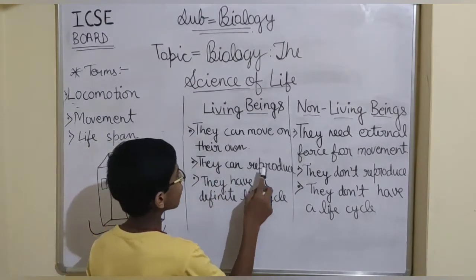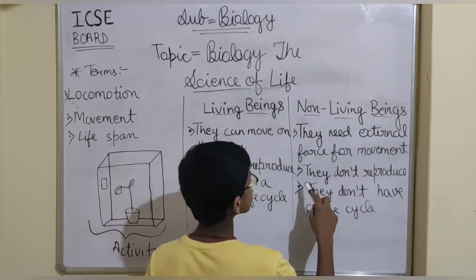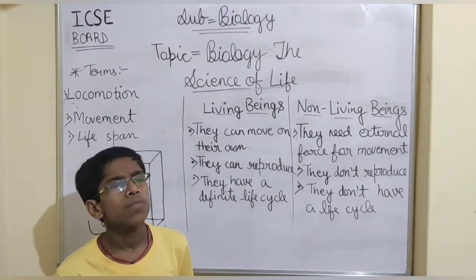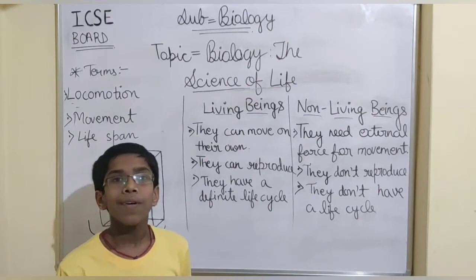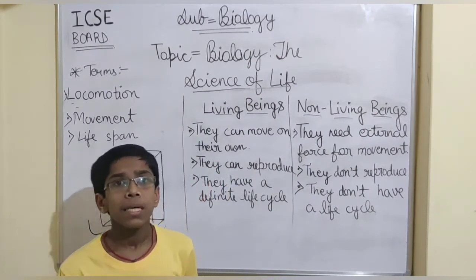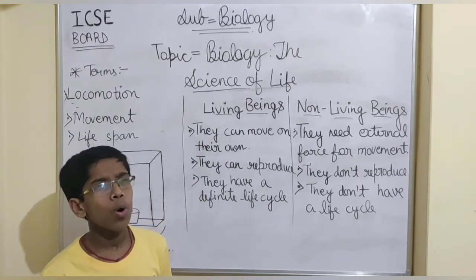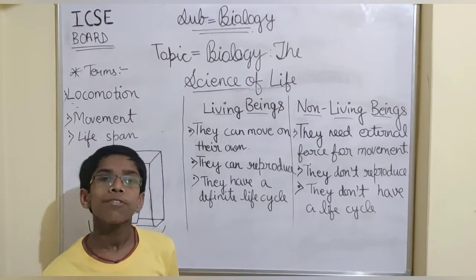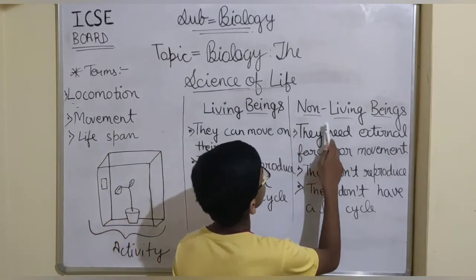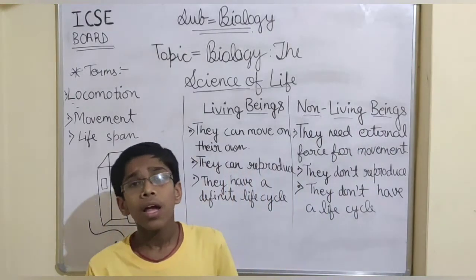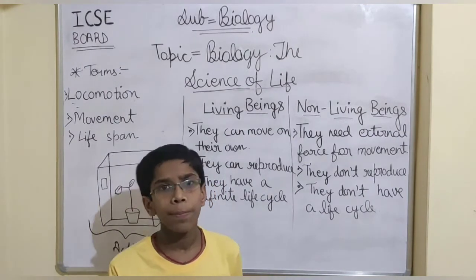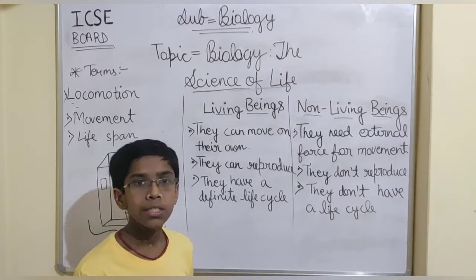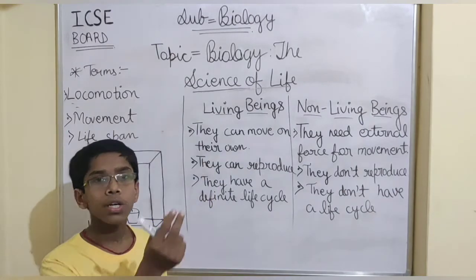Our next topic is reproduction. Living beings can reproduce, and non-living beings do not reproduce. Living beings reproduce when they grow their young ones, or they lay eggs. Some animals lay eggs, and all mammals — excluding platypus — give rise to young ones. Platypus is the only mammal that lays eggs. Sometimes seeds are made by plants, and a seed grows into a seedling when it is in the soil — if it is dispersed and in the soil, it will grow into a seedling.